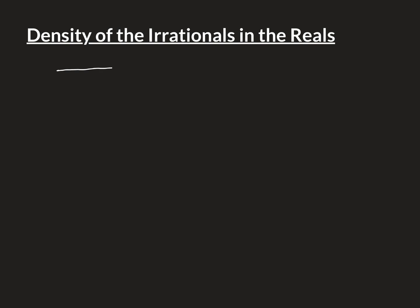Let's state explicitly what this means. The irrationals being dense in the reals means that if you take any two distinct real numbers, you can always find an irrational number in between them. If the two real numbers are distinct, one is going to be smaller — we'll call that x1 — and the bigger one we'll call x2. This property tells us there will always exist a real number r in between the two that is not a rational number. That is what is meant by the density property of the irrationals within the reals.